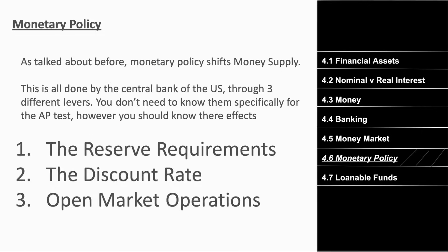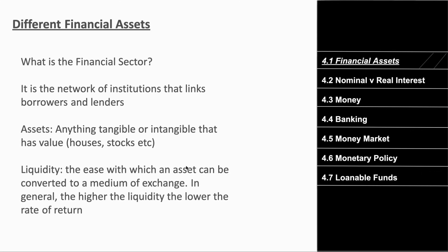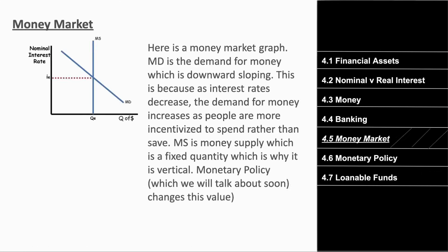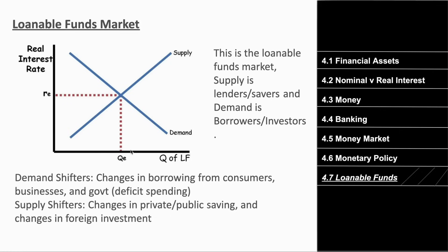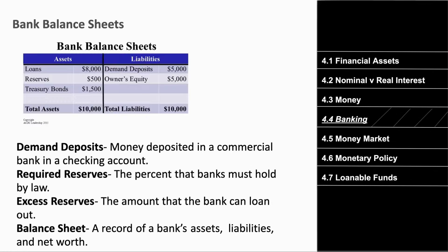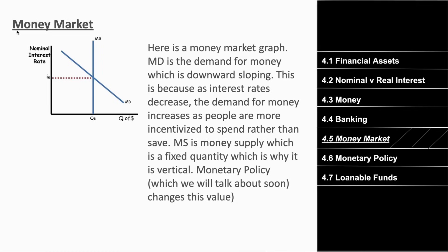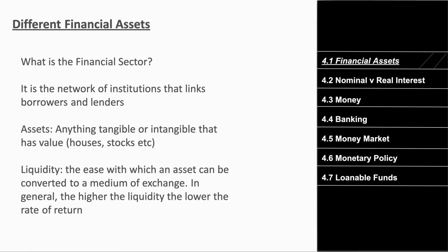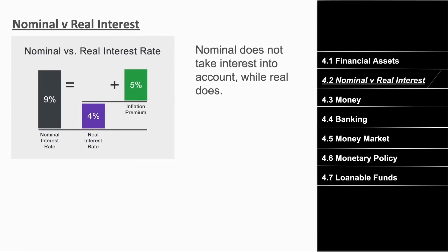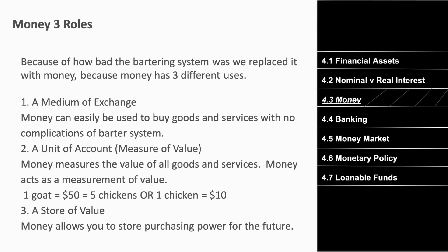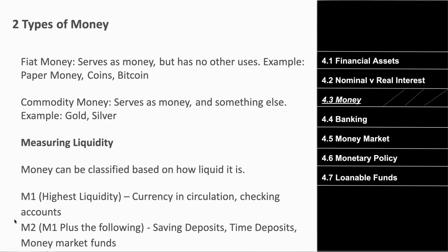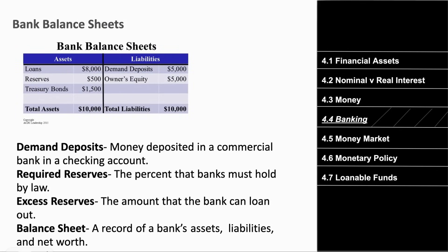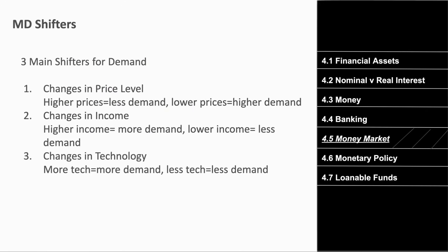This overview covers about 70% of the unit. For an AP exam score of five, you'll need to know more: deeper understanding of interest rates, M1 and M2, fractional reserve banking, and reading various bank balance sheets. You'll need to master the money market graph and more intricate details of monetary policy.